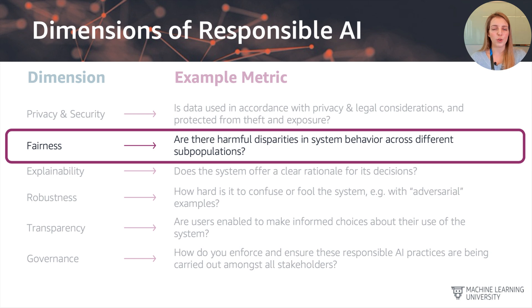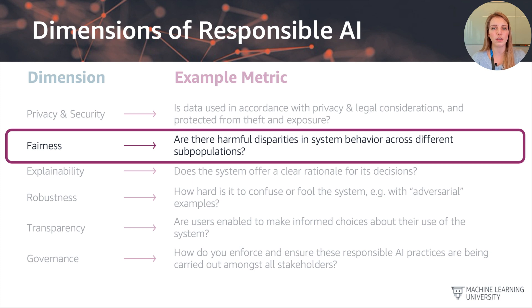For the rest of the course we're going to focus on the second dimension — the fairness dimension. This will be about defining how to quantify and measure harmful disparities in system behavior and performance across different subpopulations. The context of this course will usually be data that concerns humans, and we will look at it in the context of having different subpopulations present in the dataset.